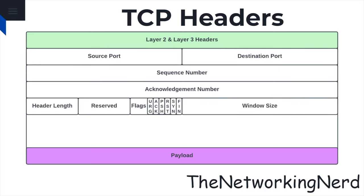The window size indicates the number of bytes that the receiver is willing to accept before requiring an acknowledgement, and it helps regulate the flow of data between the sender and the receiver. The checksum is used to detect errors in the TCP segment during transmission and ensures the integrity of the data by verifying the accuracy of the received segment.